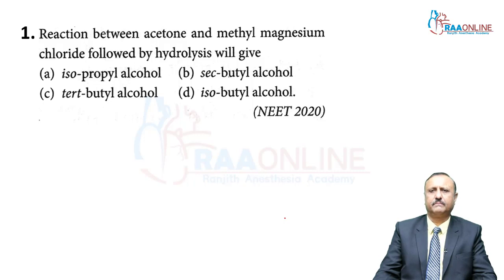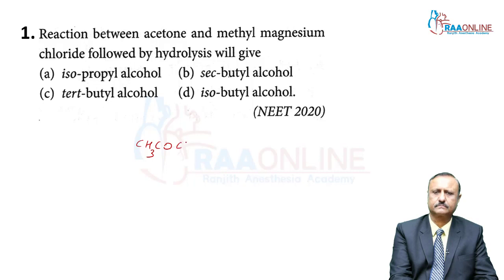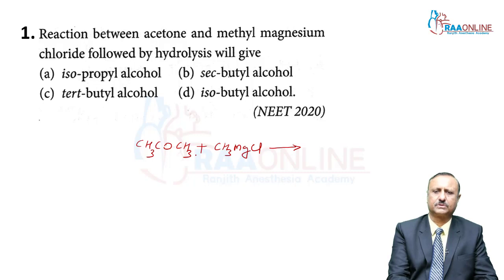Here you can see the methyl magnesium chloride is the Grignard reagent. You can write the reaction. First of all, you can write acetone: CH3-CO-CH3. Then methyl magnesium chloride, CH3MgCl. First you form this complex with these compounds and then hydrolysis gives these answers. Here CH3-CO-CH3, you can write the structure form.